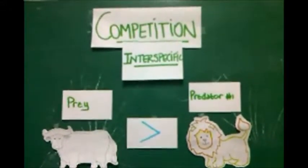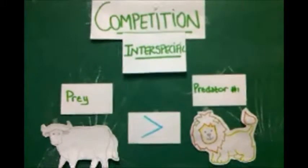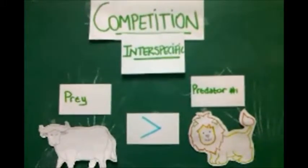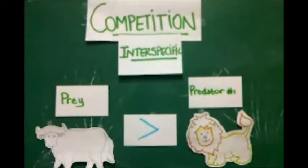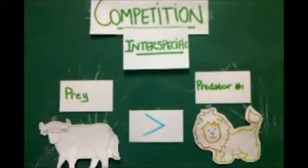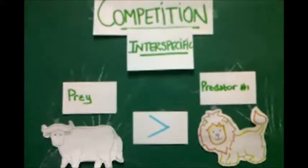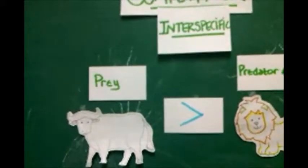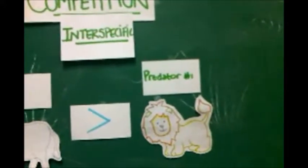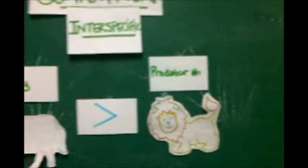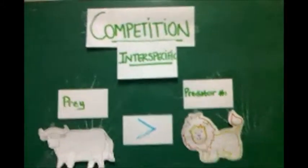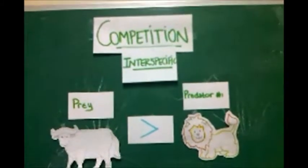We also noticed that when the herd of buffalo came along and scared the lions when they were attacking one of their own, the herd of buffaloes were superior over the predators, which were inferior. So here we have the two different interspecific competitions.